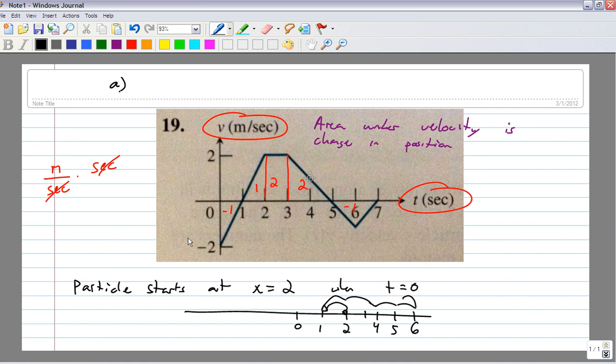So, the answer to A, find where the particle is at the end of the trip, A would be x equals 5.